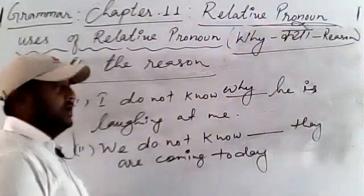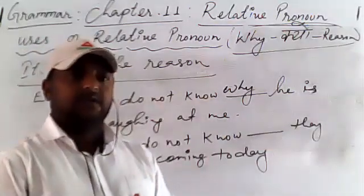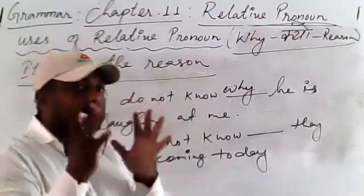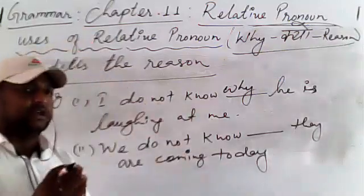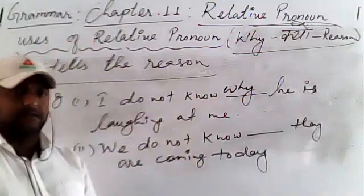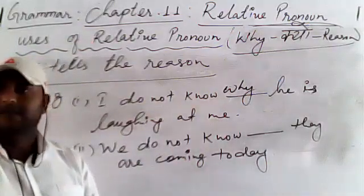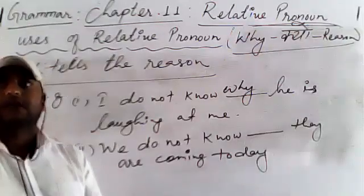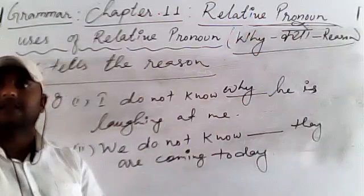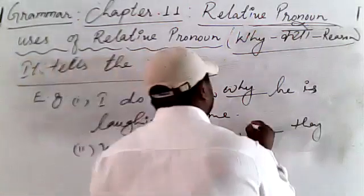Example two: we do not know why they are coming today. I do not know why they are coming today. It shows the reason — we don't know the reason why they are coming today.